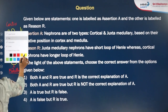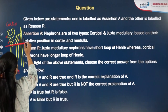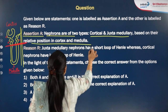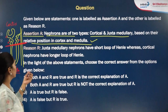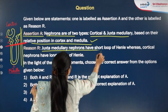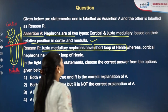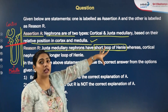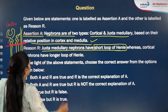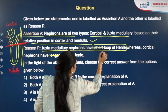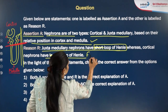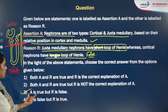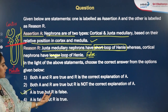The assertion states: nephrons are of two types — cortical and juxtamedullary — based on their relative position in cortex and medulla. This is absolutely correct. However, the reason states that juxtamedullary nephrons have a short loop of Henle, which is the opposite of what is true. Juxtamedullary nephrons have a long loop of Henle; it is the cortical nephrons that have a short loop of Henle. Therefore, the answer is the third option: assertion is true, reason is false.